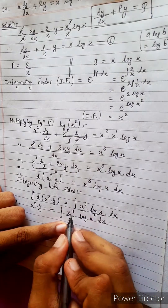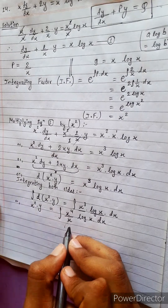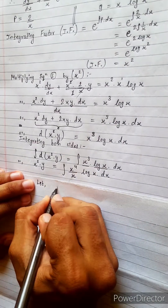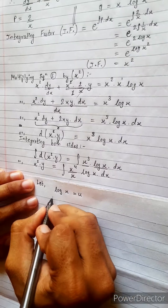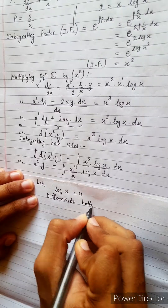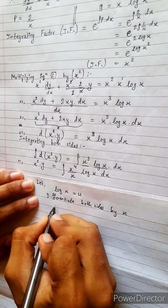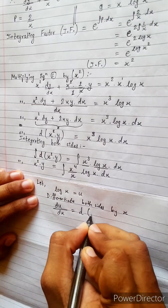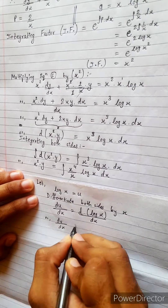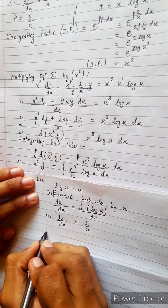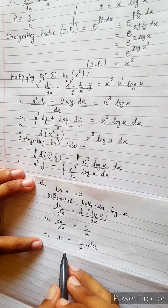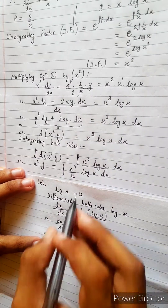Let's multiply x³ into x to get x power 4. Now let log x = u. Differentiating both sides with respect to x: du/dx = d(log x)/dx, so du/dx = 1/x, giving du = (1/x) dx.